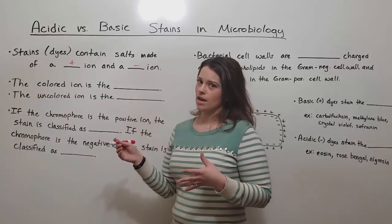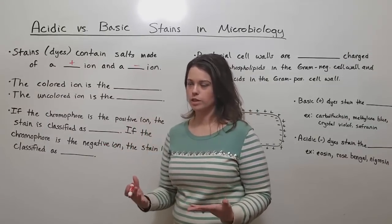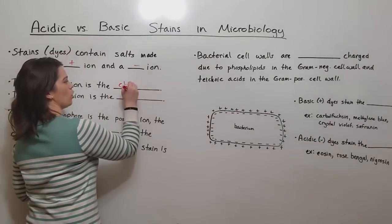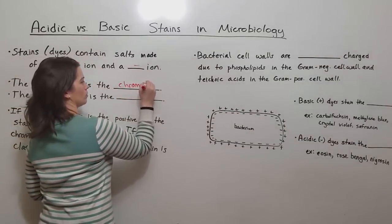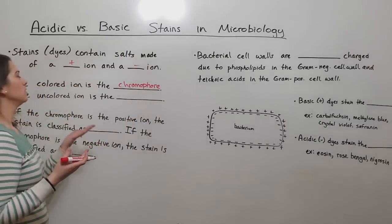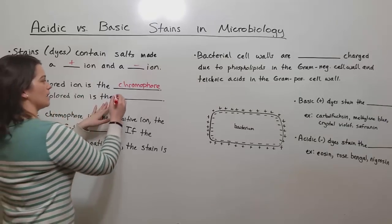In these stains, one of the ions is the colored one, the one that gives the color to the specimen, and the colored ion is known as the chromophore. The other ion, the one that is uncolored, is the counter ion.